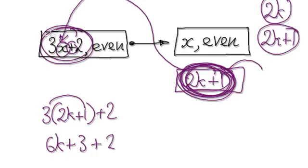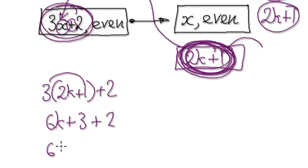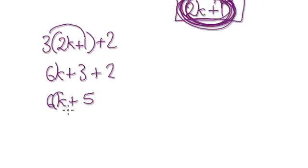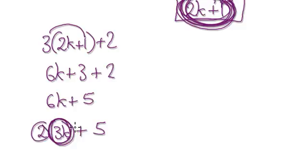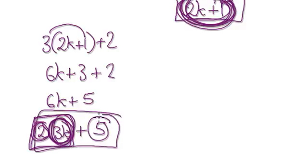I'm going to visualize this bit here as 2 times 3k plus 5. You see, any number times 2 will be an even number. So this thing here will definitely be an even number because anything times 2 will be an even number. If you have an even number add an odd number, then overall it will be an odd number.